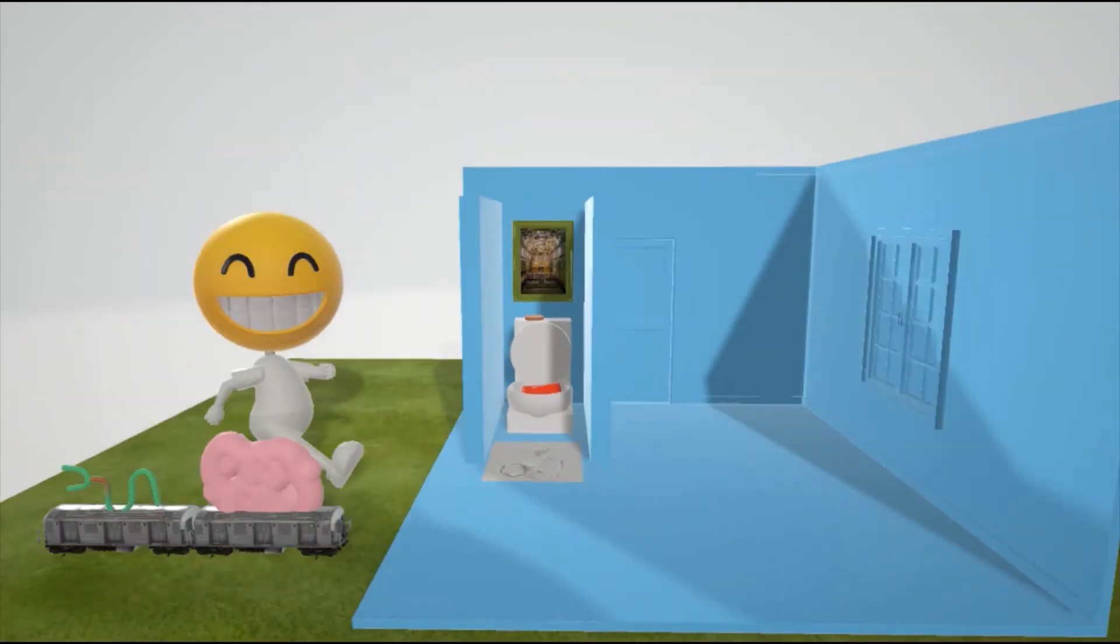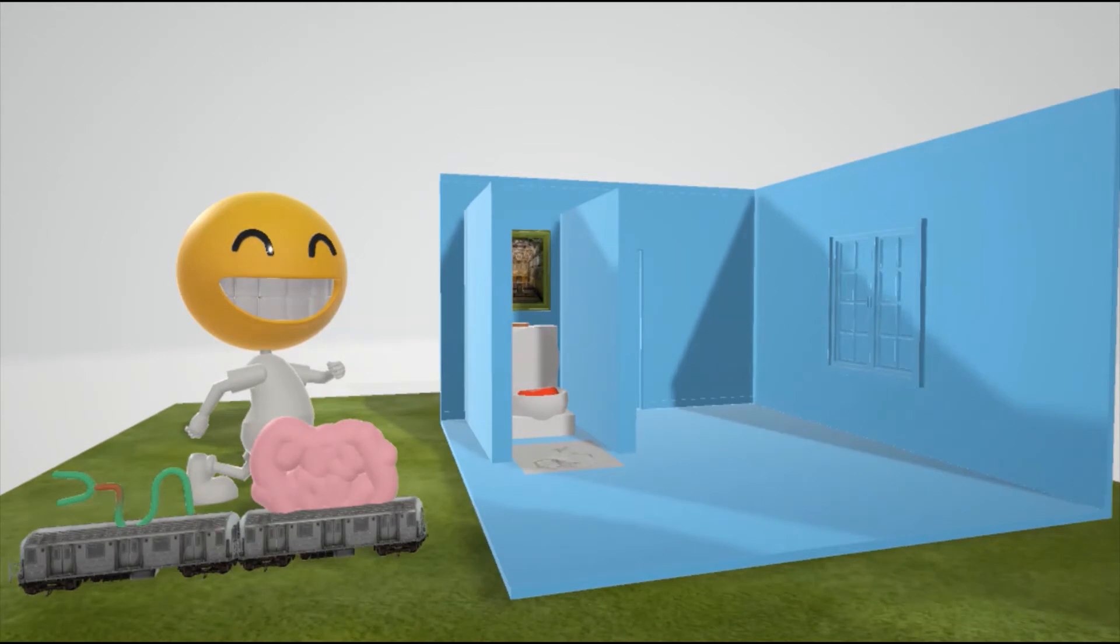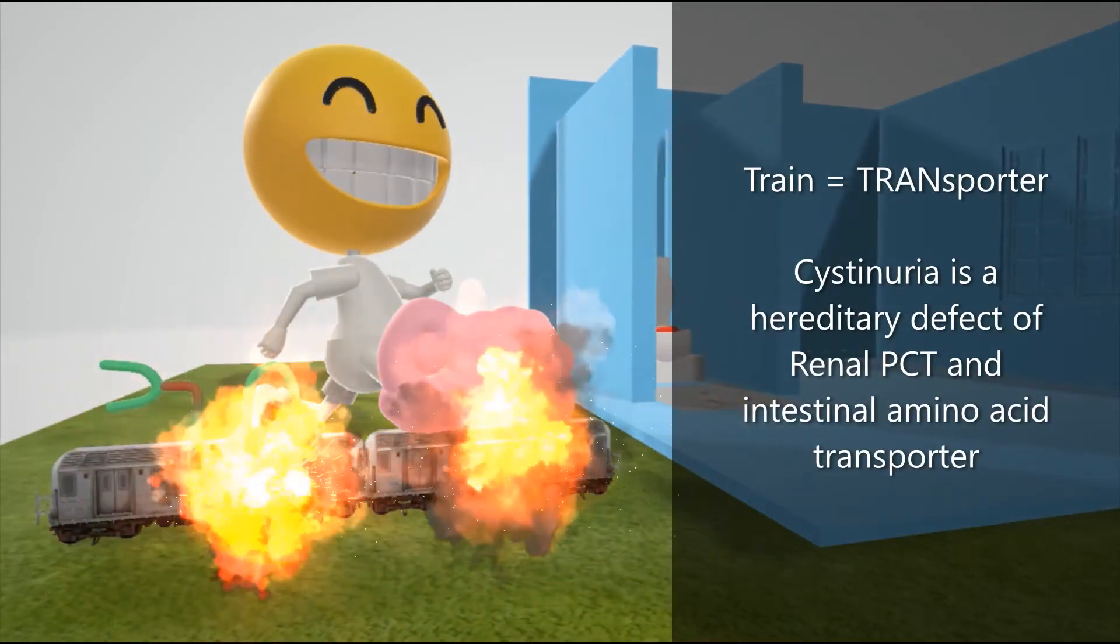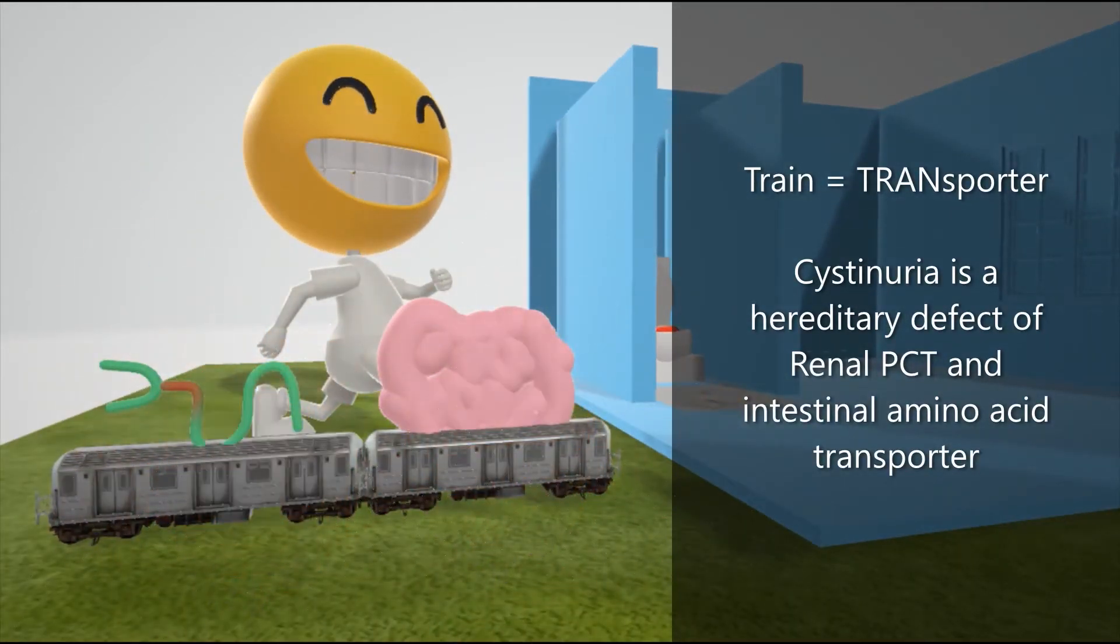We note at the beginning of the video that this boy's train broke, and it's not any train. One train carries the intestines, and one train carries the nephron, with the PCT highlighted. This train exploding represents the hereditary defect of renal PCT and intestinal amino acid transporter. Train for transporter. That's what Cystinuria is—a hereditary defect of renal PCT and intestinal amino acid transporter.